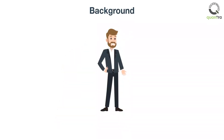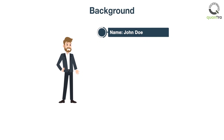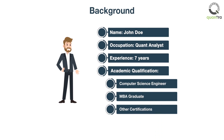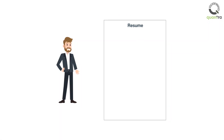Here we have with us John Doe, a quant analyst with seven years of experience. He is an engineer who has completed his MBA, along with various other certifications such as the Executive Program in Algorithmic Trading from Quantra Quantitative Learning. In this video, we help John create his resume.